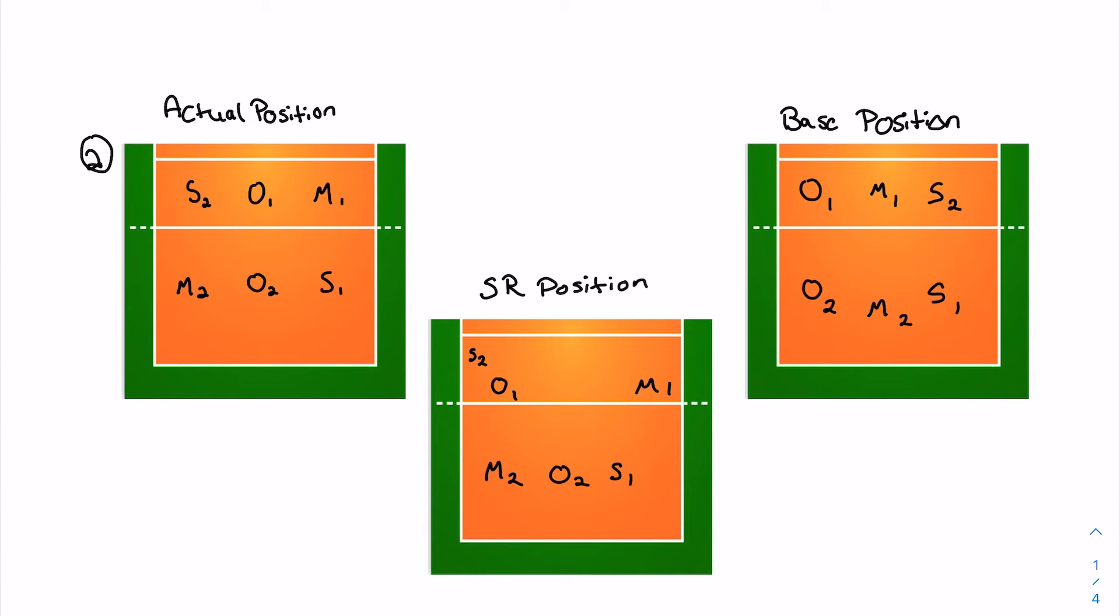Your base positions again, once the ball goes over the net, your middle will move back into the middle, your setter will be back onto their right side, and then your back row will adjust to their base with the outside on the left, setter on the right, and your middle in the middle.